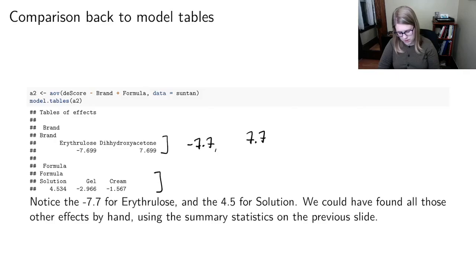4.5. What did I have here? Oh, and negative 1.6. So a little bit of rounding in terms of the means that I was getting from R versus the more complete numbers from the model.tables. But those are the effects. So we actually went and found all those effects by hand using those summary statistics on the previous slide. So that's another thing that I could ask you to do. Tell me all of the brands, like fill in the model.tables.